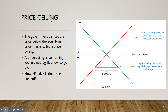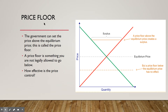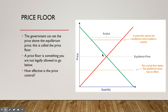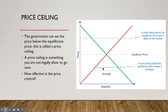So to summarize: ceilings, if below the equilibrium price, create a shortage. A price floor above the equilibrium price creates a surplus. If the ceiling is above the equilibrium price, it's ineffective. If the floor is below the equilibrium price, it's ineffective. So they're mirrors of each other.